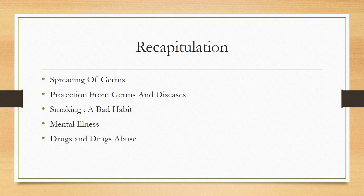Then we read about smoking. We came to know that smoking is a very bad habit. It not only causes breathing difficulties but it also leads to lung cancer and mouth cancer. We read about mental illnesses. There are two main types of mental illnesses: psychosis and neurosis. Regarding drugs and drug abuse, we read about heroin, hashish, etc. These drugs contain a large amount of nicotine, which causes addiction and produces harmful or abnormal effects on our body.